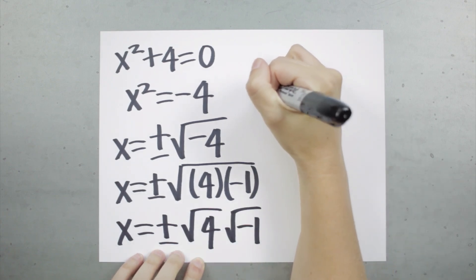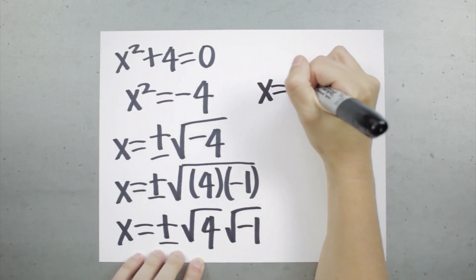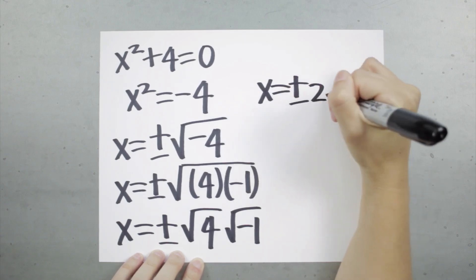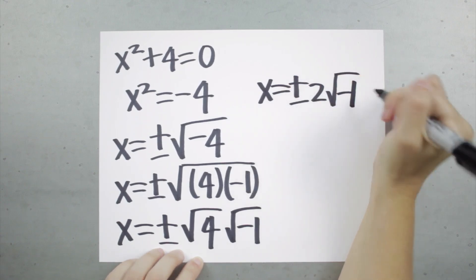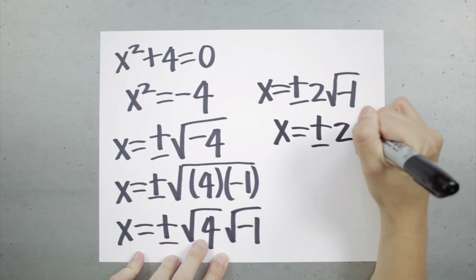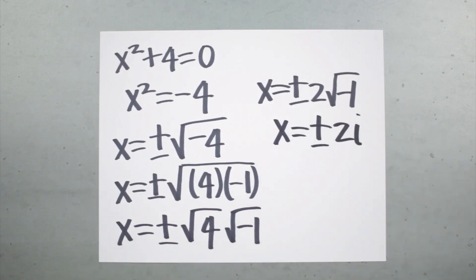Or x is positive or negative 2 times square root of negative 1, when we take the square root of 4. And since we know that square root of negative 1 is the imaginary number i, we can say that x is now positive or negative 2i.